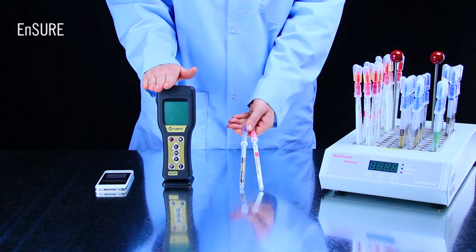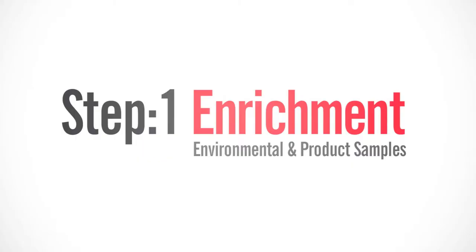MicroSnap is a two-step test. The first step is the enrichment step. Write the location or product on the swab tube label for easy identification.